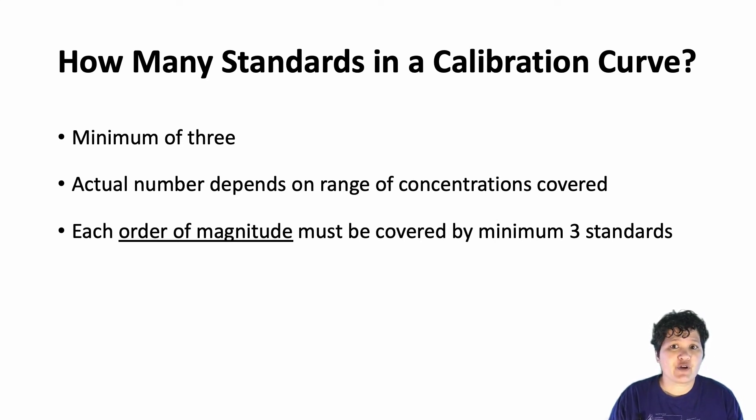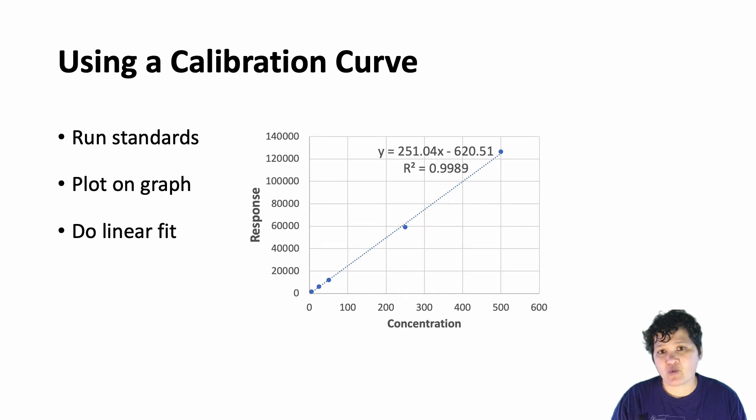So when you make a calibration curve, you're basically going to create your standards and run them on the instrument. You're going to graph the concentrations of the standards on the x-axis and the instrument responses on the y-axis, and then you do a linear fit. You want to make sure that you have both the equation for the line and the r-squared for your linear fit. You're going to use the equation for the line to calculate the concentrations of your samples, and the r-squared is a measure of quality for your external standards. The closer your r-squared is to 1, the more linear your calibration curve is, and the more trustworthy your measurements are going to be.